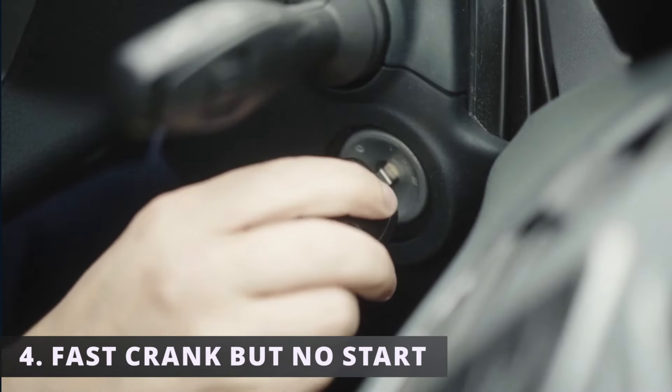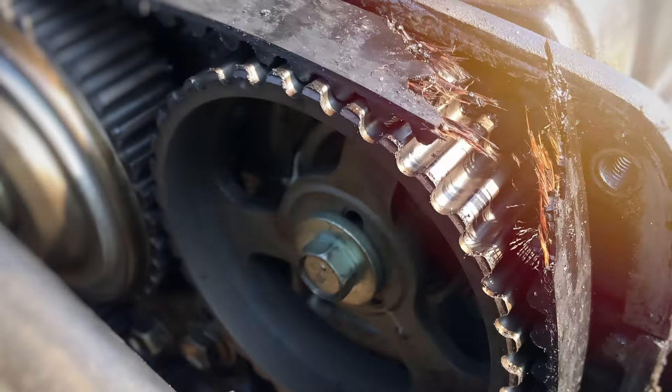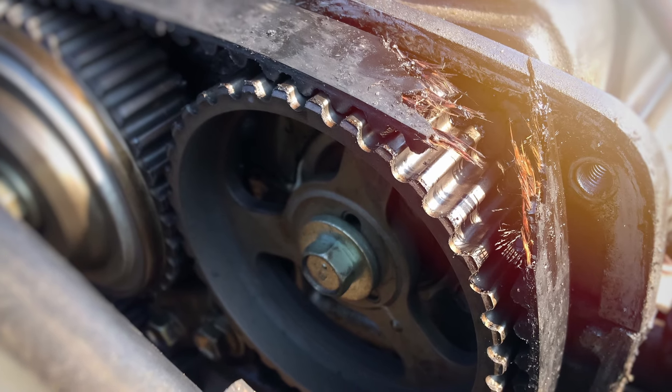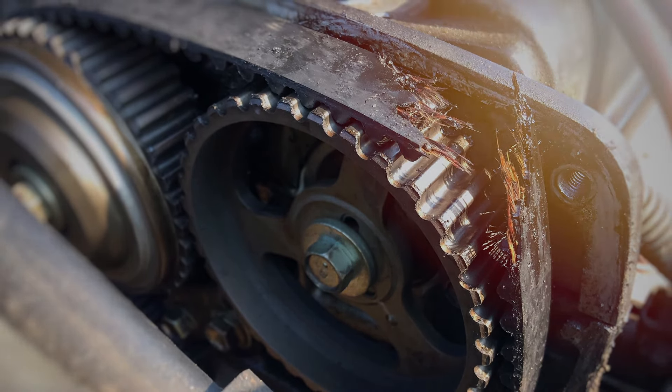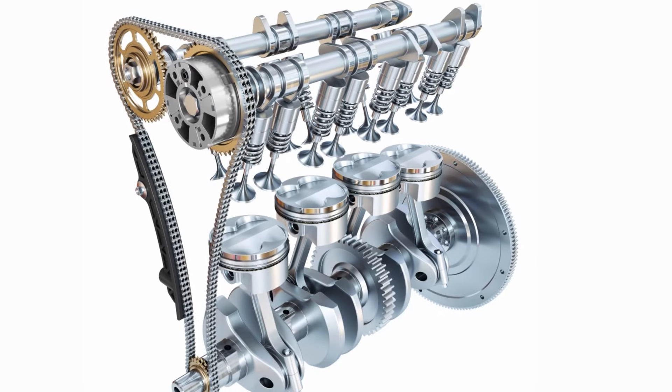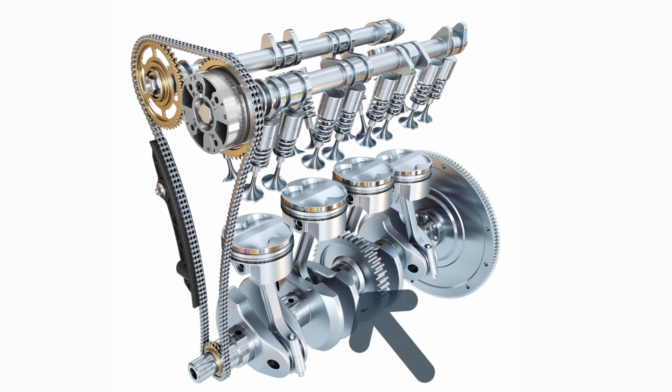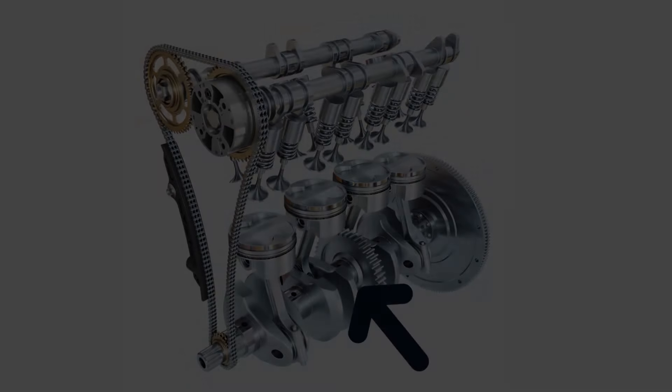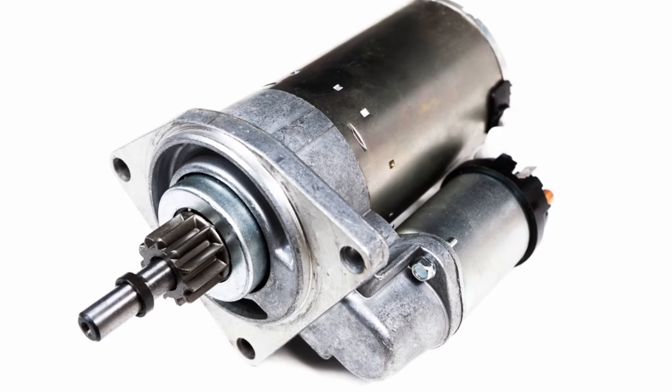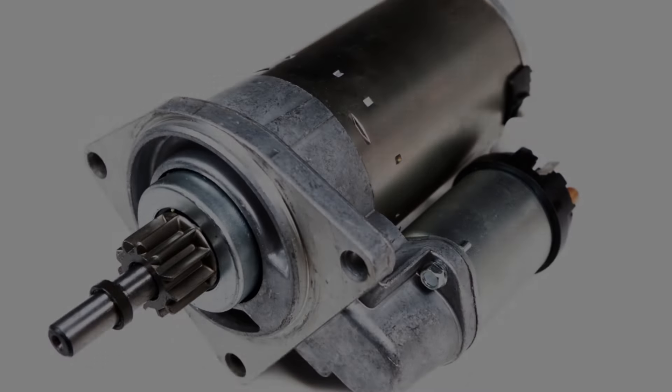The fourth symptom is a fast crank but no start. If you don't replace your timing chain or belt within the manufacturing specifications, it could break. A broken belt will fail to rotate the crankshaft and camshafts together, resulting in the starter only rotating the crankshaft. This reduces the torque needed from the starter, which is why you hear it moving faster.